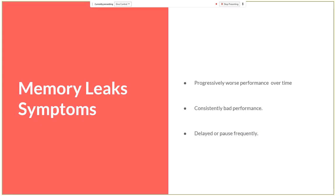An essential part of understanding memory leaks is the garbage collector. Simply explained, the garbage collector is an automated process that finds data which cannot be accessed in the future. It checks the memory, and if it finds something that is not accessible anymore, it removes it from memory. But sometimes this doesn't happen because the developers made some erroneous behavior in the code.